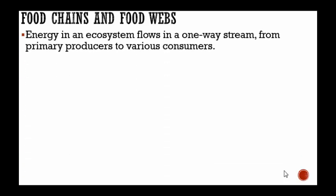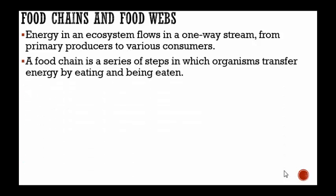Energy in an ecosystem flows in a one-way stream. It goes from the primary producers, like our autotrophs, to the various consumers — the primary consumer, the secondary consumer, the tertiary consumer, and so on.